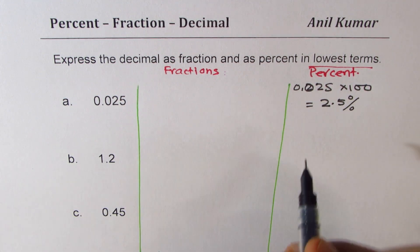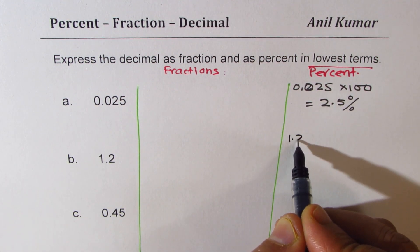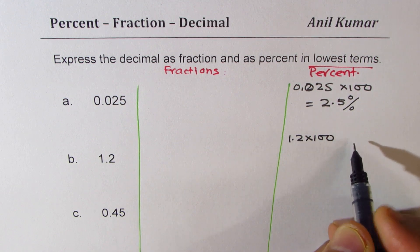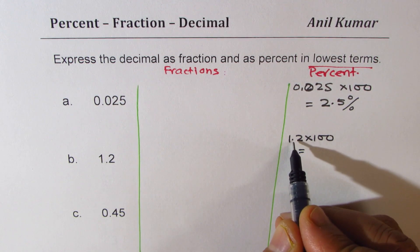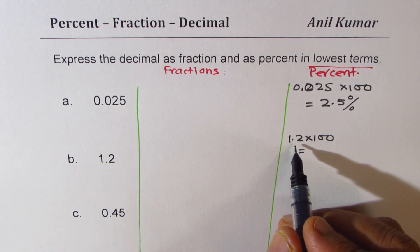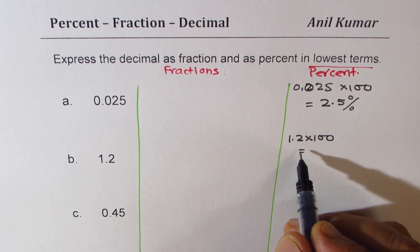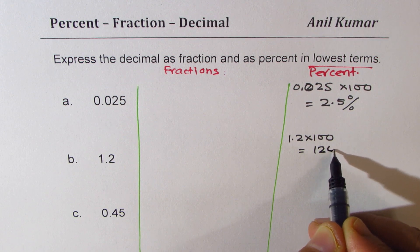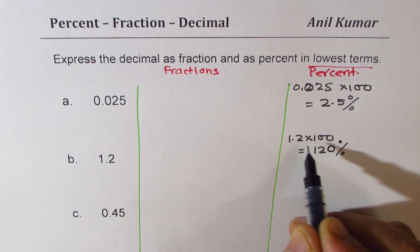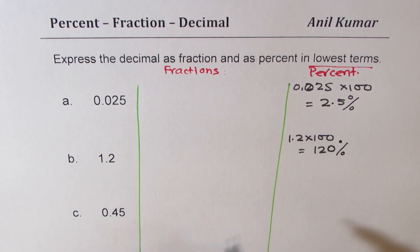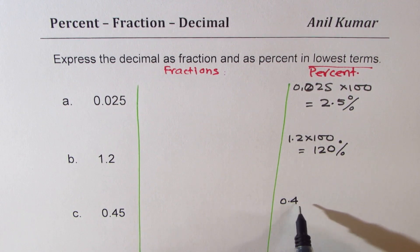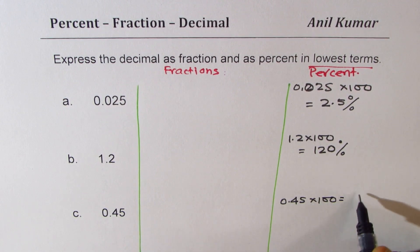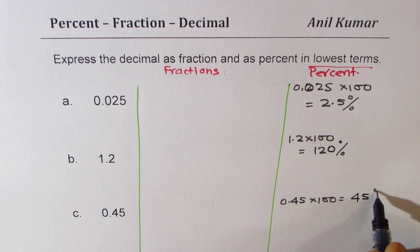For 1.2: 1.2 times 100, multiply by 100 — the decimal moves and it makes it a bigger number. So it is 120 percent, more than 100 percent. For 0.45: 0.45 times 100 gives you 45 percent.